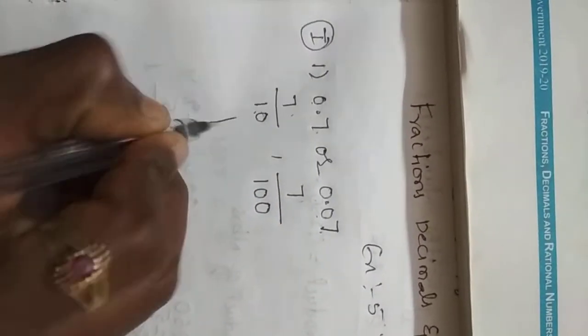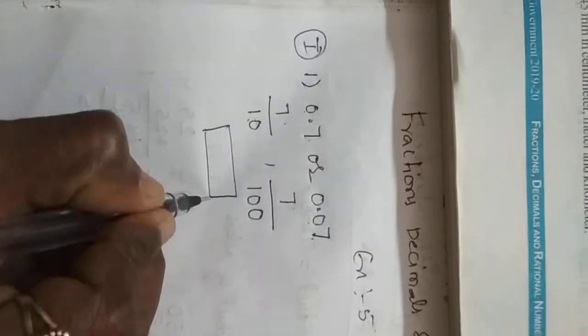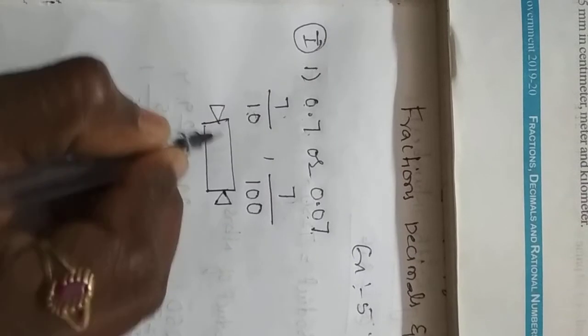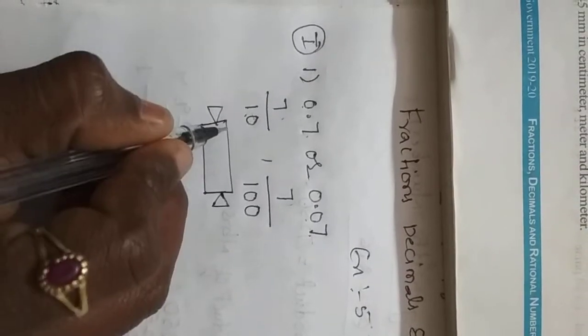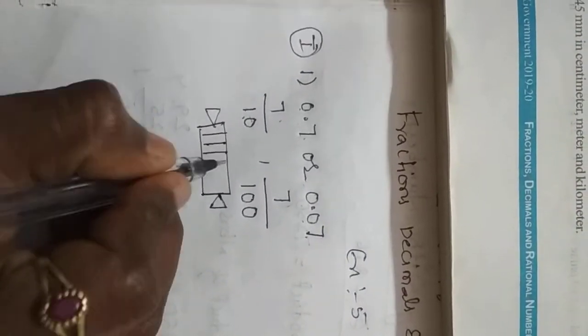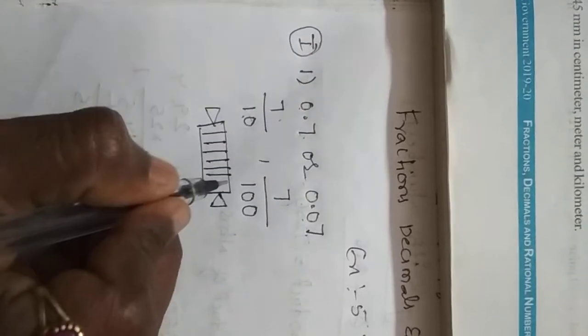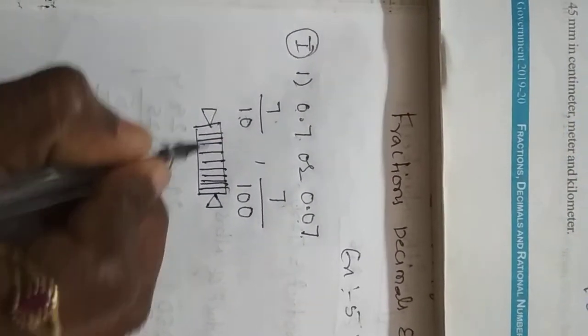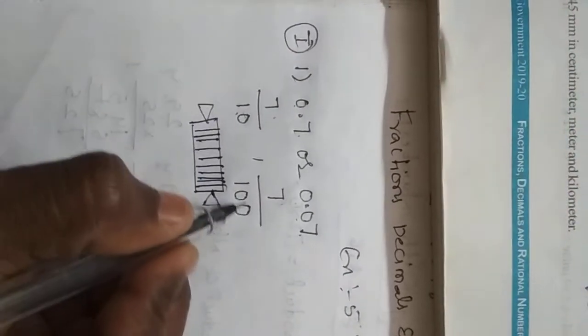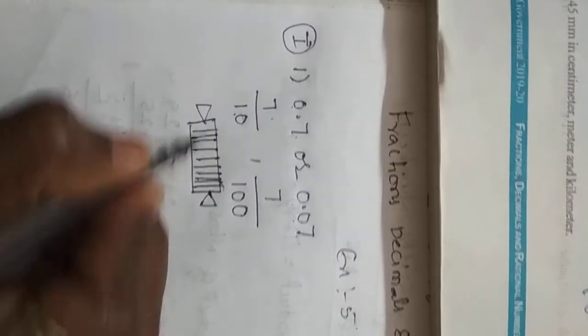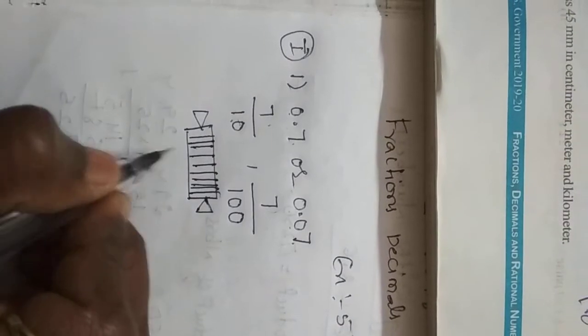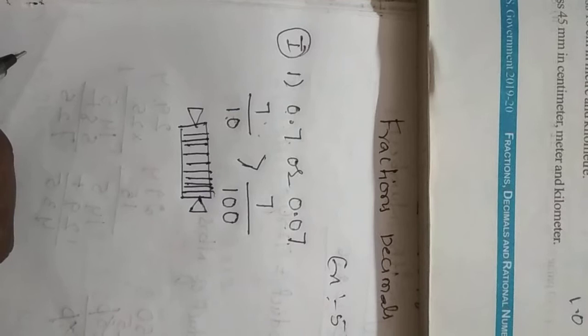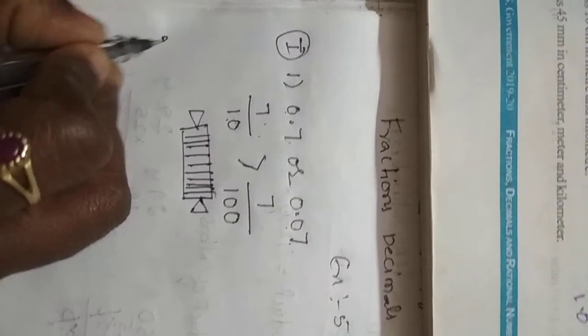For example, we are taking one chocolate. This chocolate is made into 10 parts: 1, 2, 3, 4, 5, 6, 7, 8, 9, 10. If you have to make 100 parts, how many times you have to do? So 7 by 10 is greater than 7 by 100.